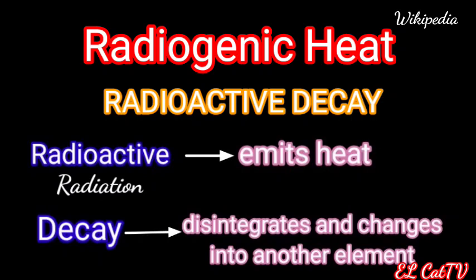The next source of heat is called radiogenic heat. It is the radioactivity of some elements found in the Earth's crust. Radiogenic heat is the heat produced during radioactive decay. What is radioactive decay? The term radioactive — as it implies, there is radiation. An element that is radioactive emits heat.